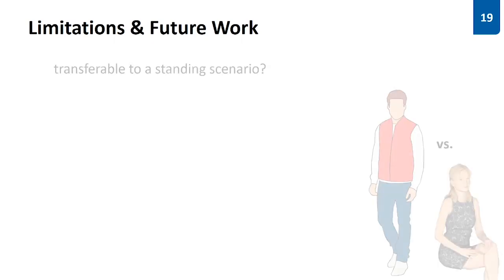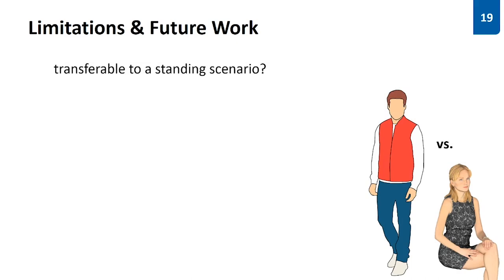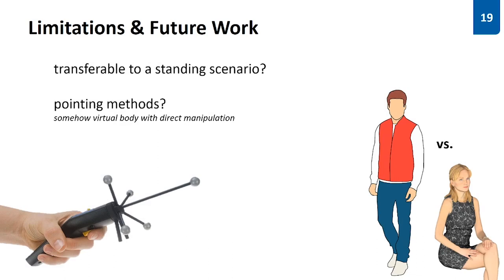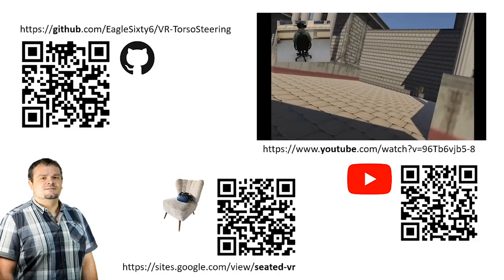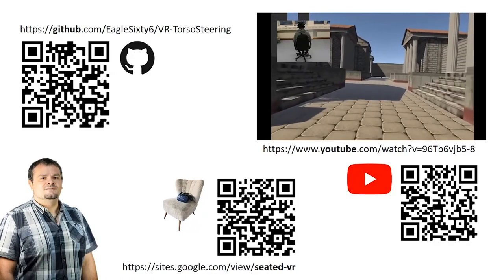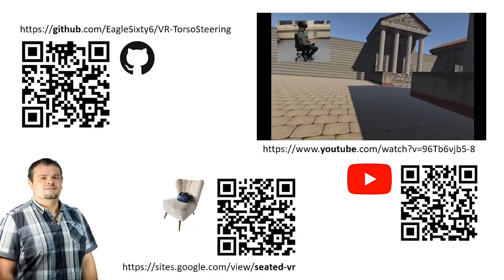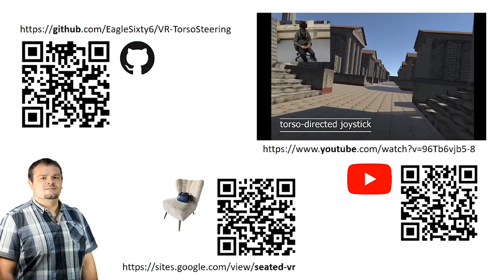So, what are the limits of our work and what is possible future work? First, are the findings we made transferable also to a standing scenario and what are the differences? Second, how do the tested methods compare to pointing directed methods, which are somehow like our virtual body or pointer directed method but with direct manipulation? And last, what about further variables like presence and cyber sickness because of the amount of conditions we only had a first look into those? The code and all sources to run the experiment are freely accessible on GitHub and the full video you can watch on YouTube. If you are further interested in more seated stuff, also visit our workshop page.